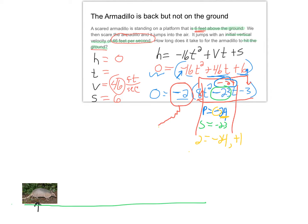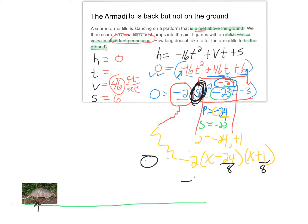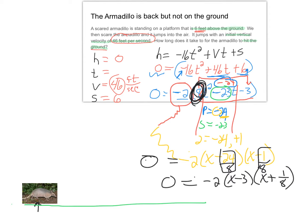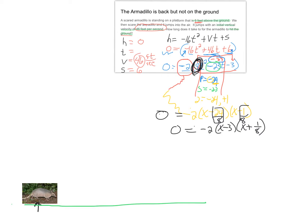We parenthesis things up and bring the 2 back. We have negative 2 times (x minus 24)(x plus 1), but since we did the slide we have to divide by 8. So we get 0 equals negative 2 times (x minus 3) times (x plus 1/8), since x minus 24 over 8 reduces to x minus 3.